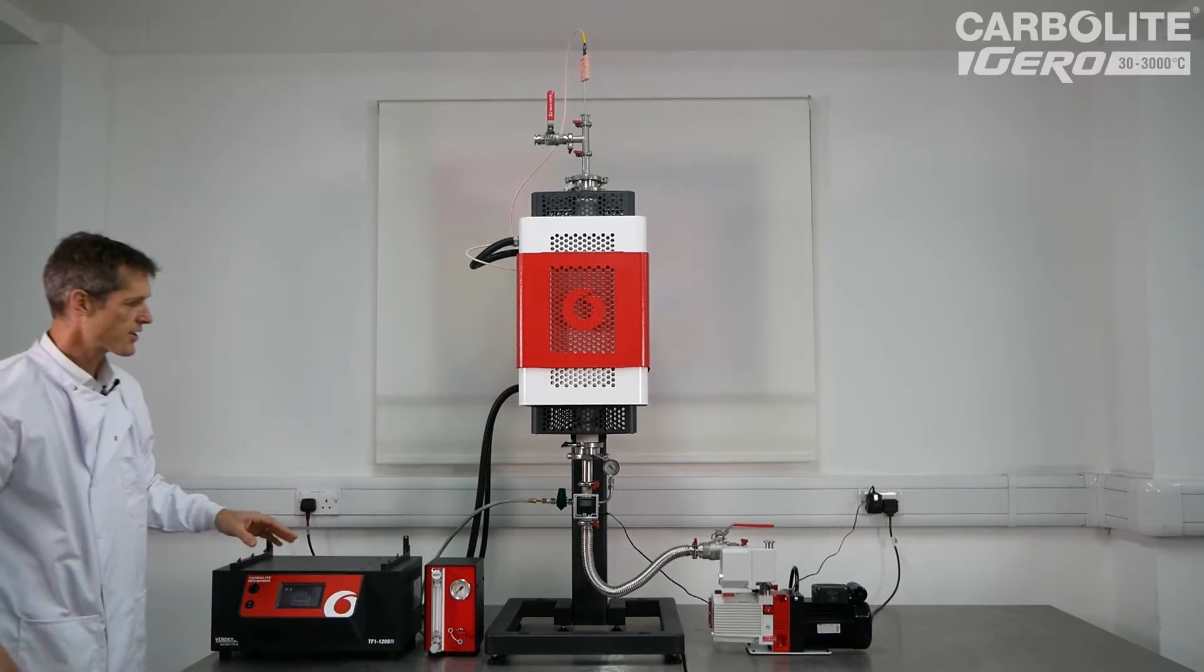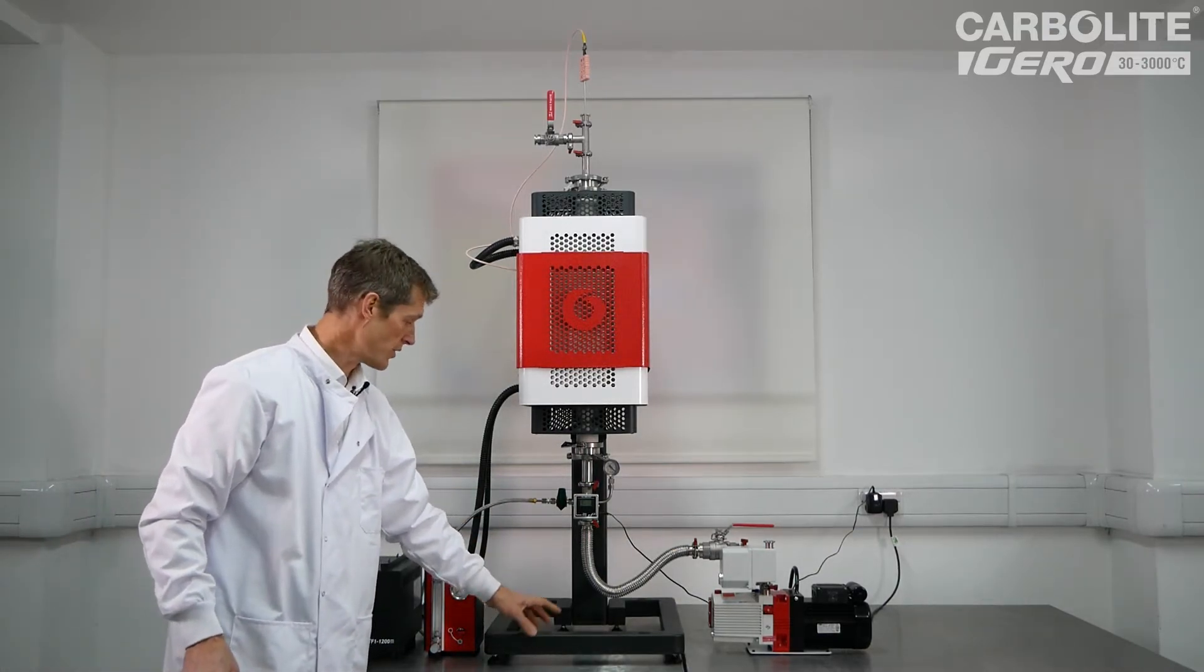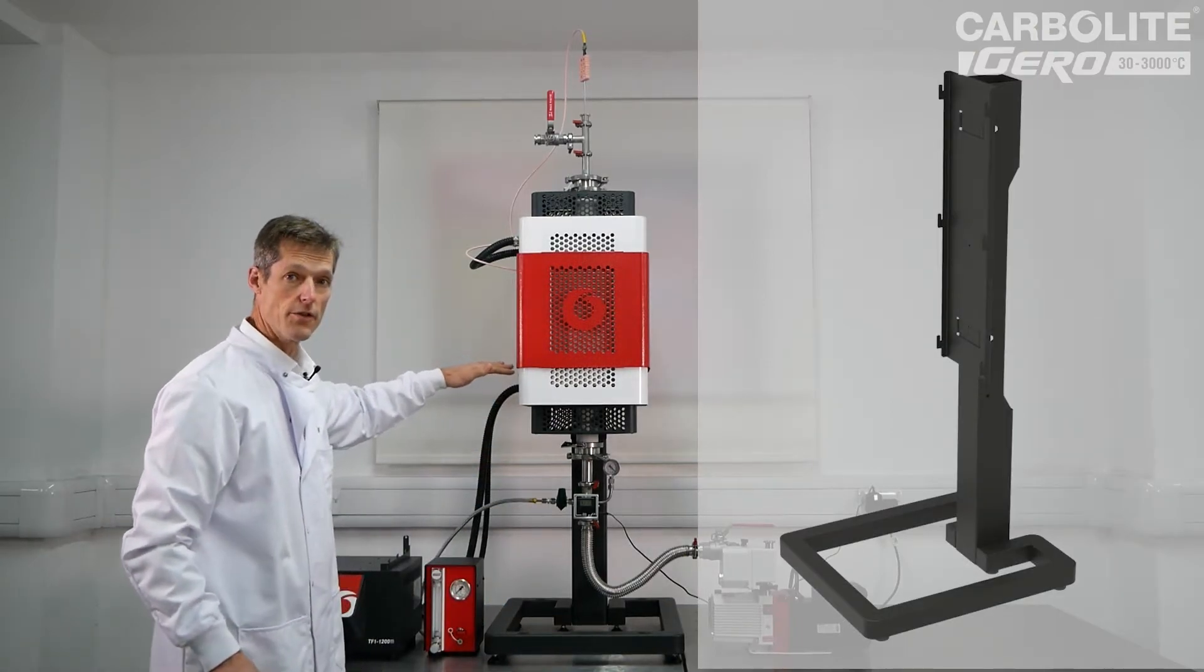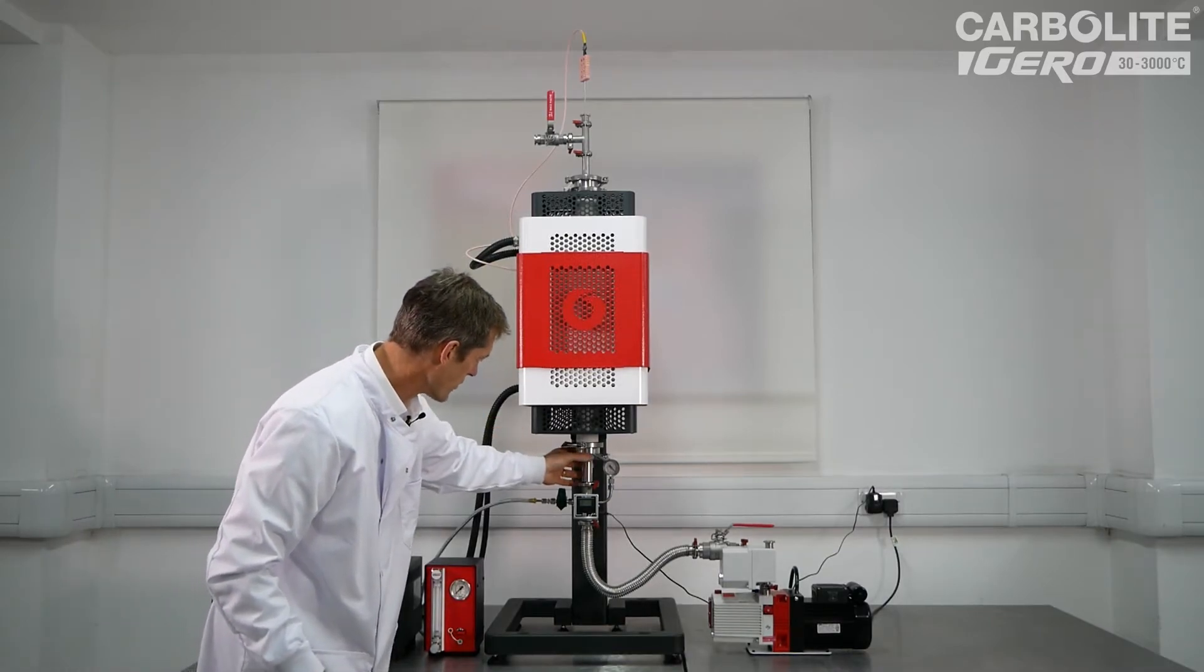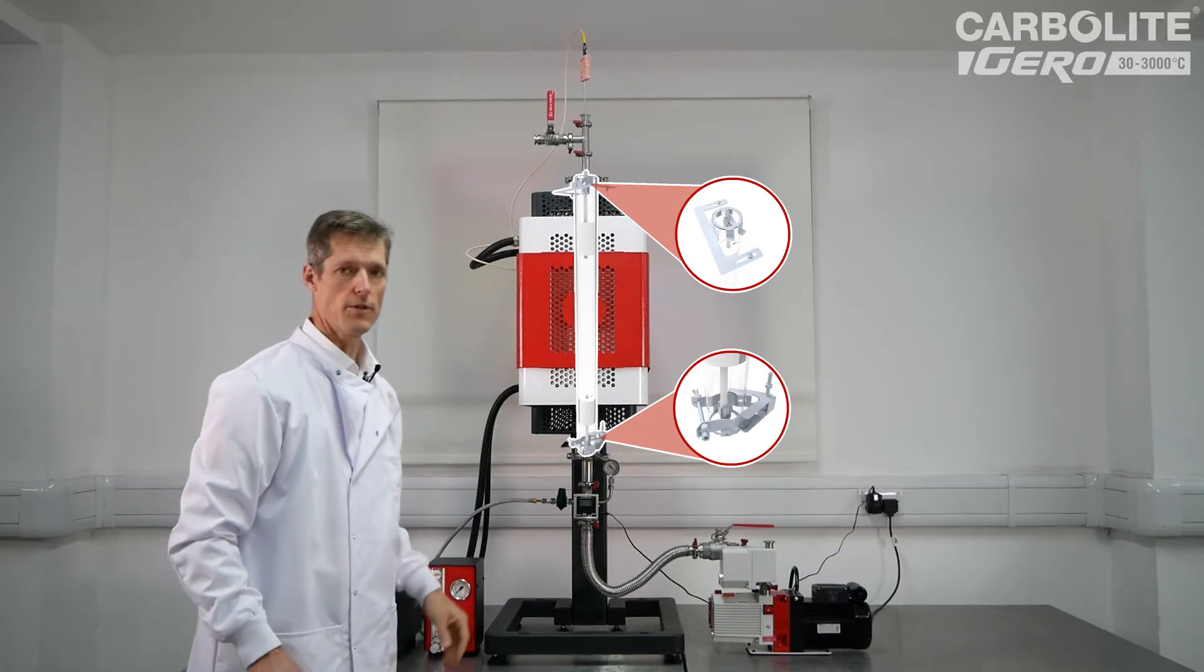In this case, the furnace is mounted on this optional vertical kit, which comprises the stand. The furnace can be mounted at various heights on the stand, and then some little bits of hardware that grip and support the work tube to set it at the right height within the furnace.